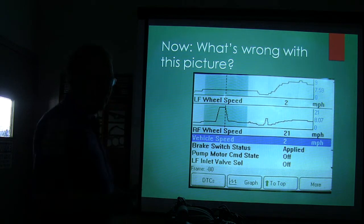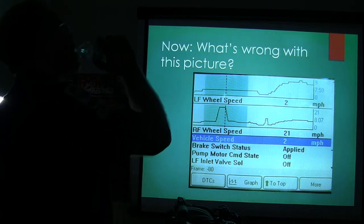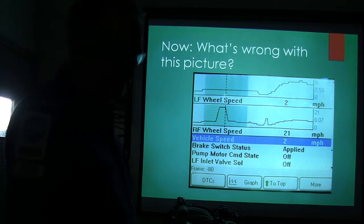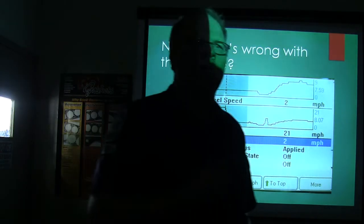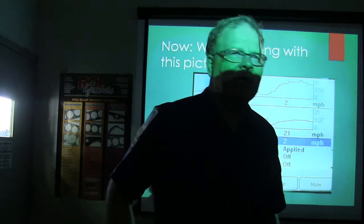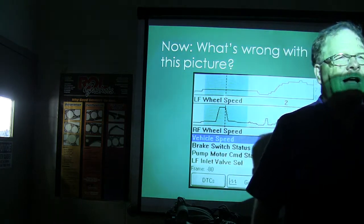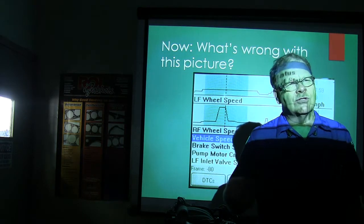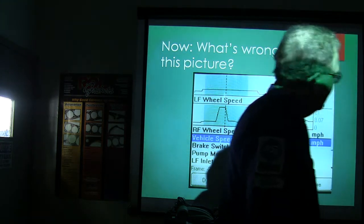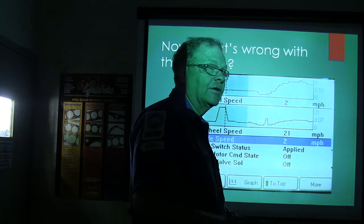Look at that scan tool screen — it didn't have an ABS light on, believe it or not. What it caused was: whenever she took off, the traction control light would come on because it thought she was spinning a wheel. The car was actually going two miles an hour and one of the wheel speed sensors was reading 21. You'll see that slide again when we start talking about wheel speed sensors.